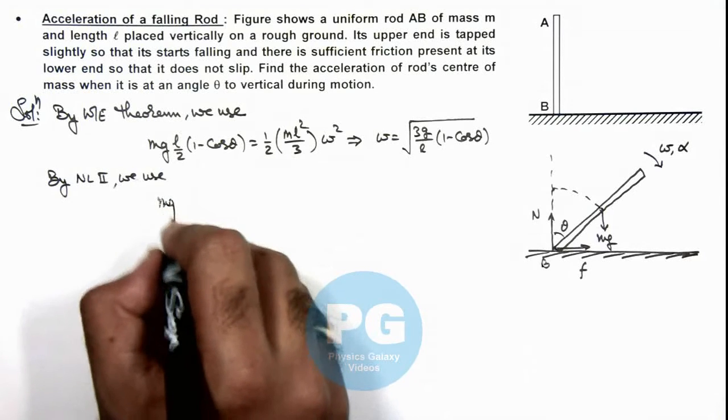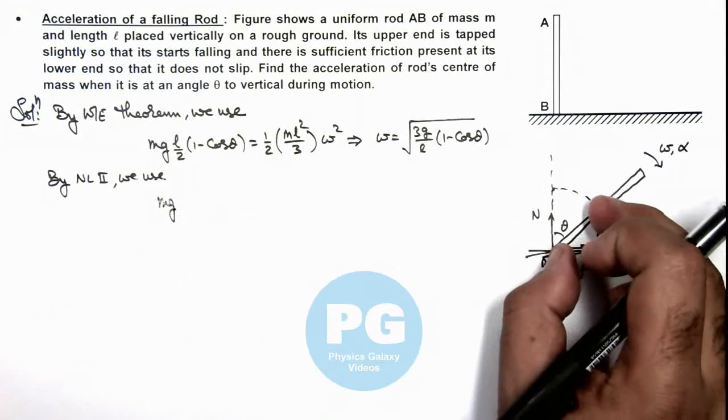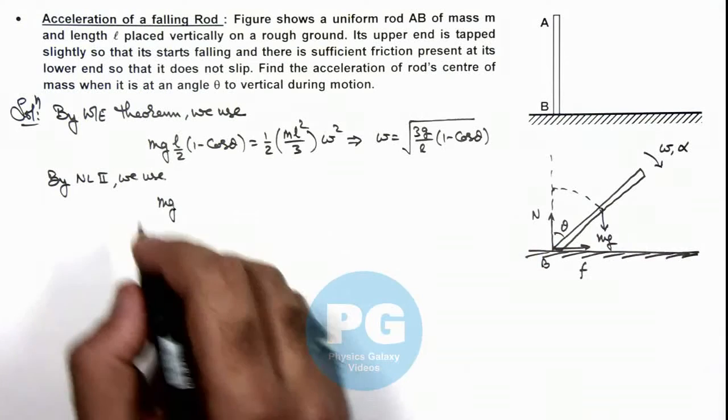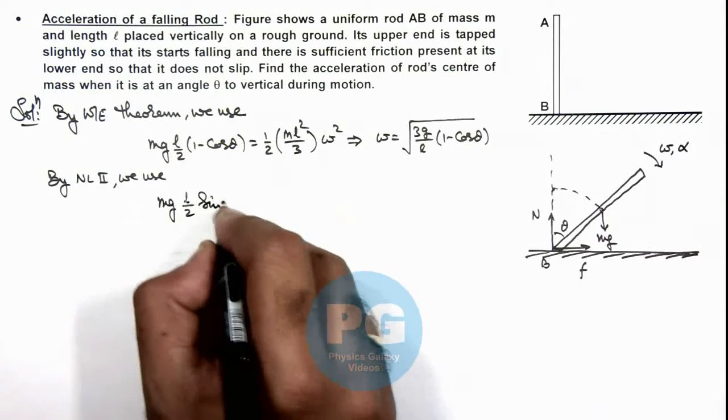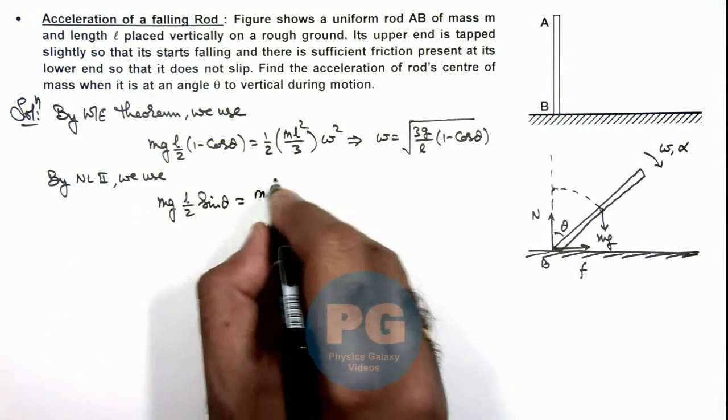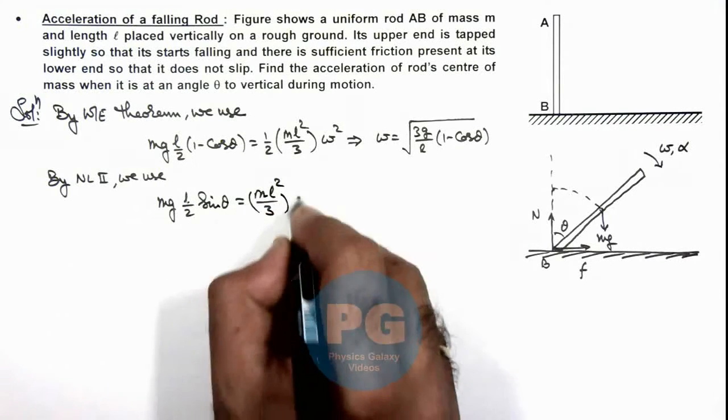This is mg multiplied by l/2 sine θ. So we can write it as (l/2) sin θ equals (ml²/3)α.